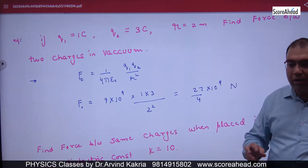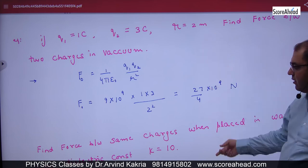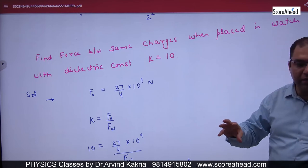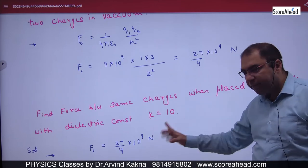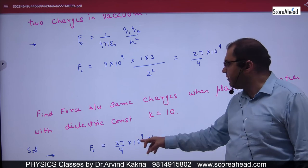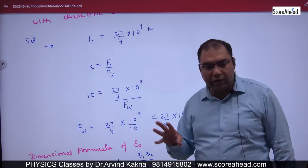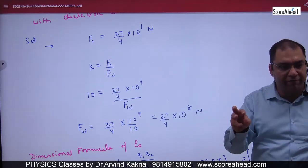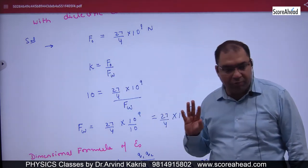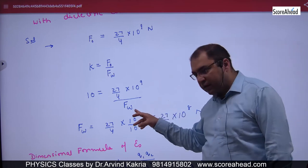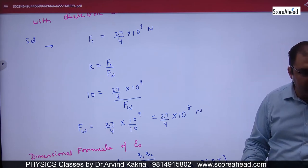Now suppose the same charges Q1, Q2, and distance R are placed in water with dielectric constant K = 10. You already calculated the force in vacuum as 27/4 × 10⁹ N. Using K = F₀/F_M, with K = 10, you cross multiply to find the force in water. This is how you use the dielectric constant in numericals.